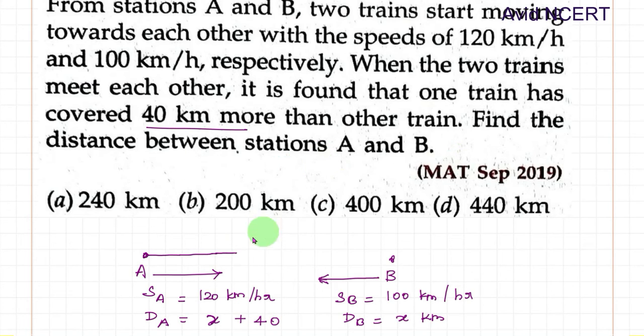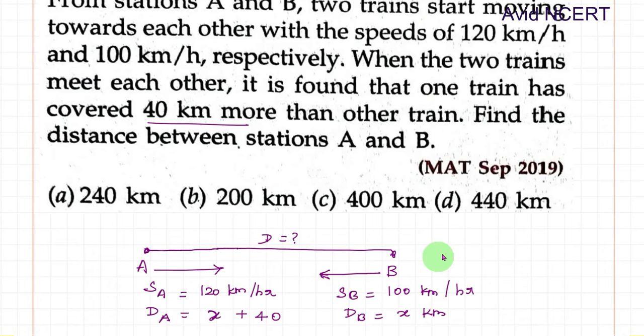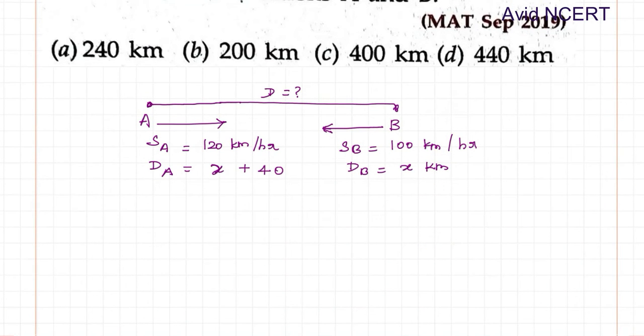Find the distance between stations A and B. So we are going to find the distance. The general formula we know for speed is DST, which is distance equals speed into time. Just to remember that, we can remember it as DST.